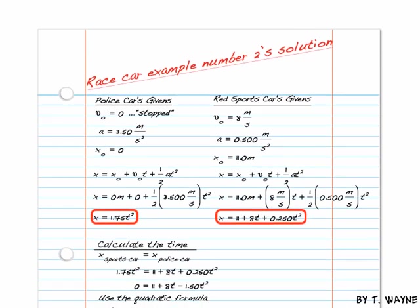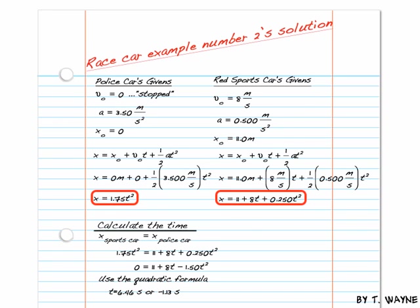My next step is to calculate the time in order to find the distance. The first thing I'm going to do is I'm going to use my basic premise, that the two distances they travel is the same. So the distance of the sports car, that is X subscript sports car, equals X subscript police car. That makes sure that the reader knows what you're doing, that you're setting these two distances the same.